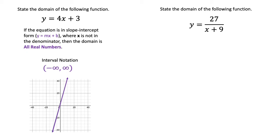The second equation, y equals 27 over the expression x plus 9, has a denominator, and it also has x in the denominator. When this happens, you will have a restricted value for that x, because the denominator is undefined at zero.